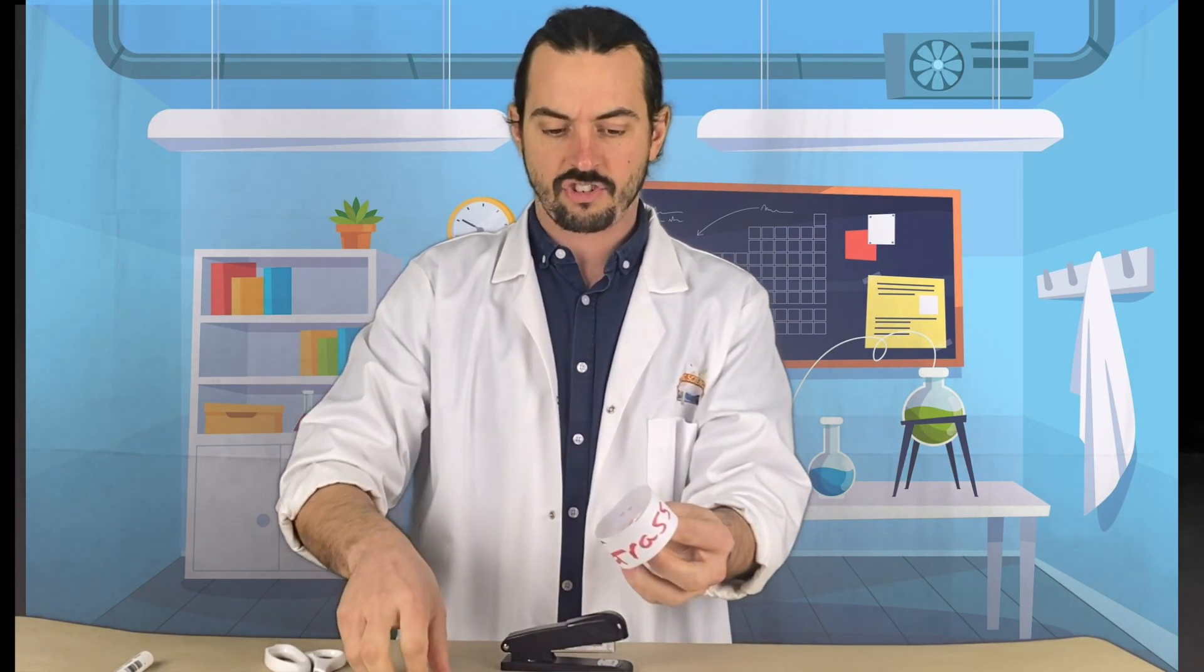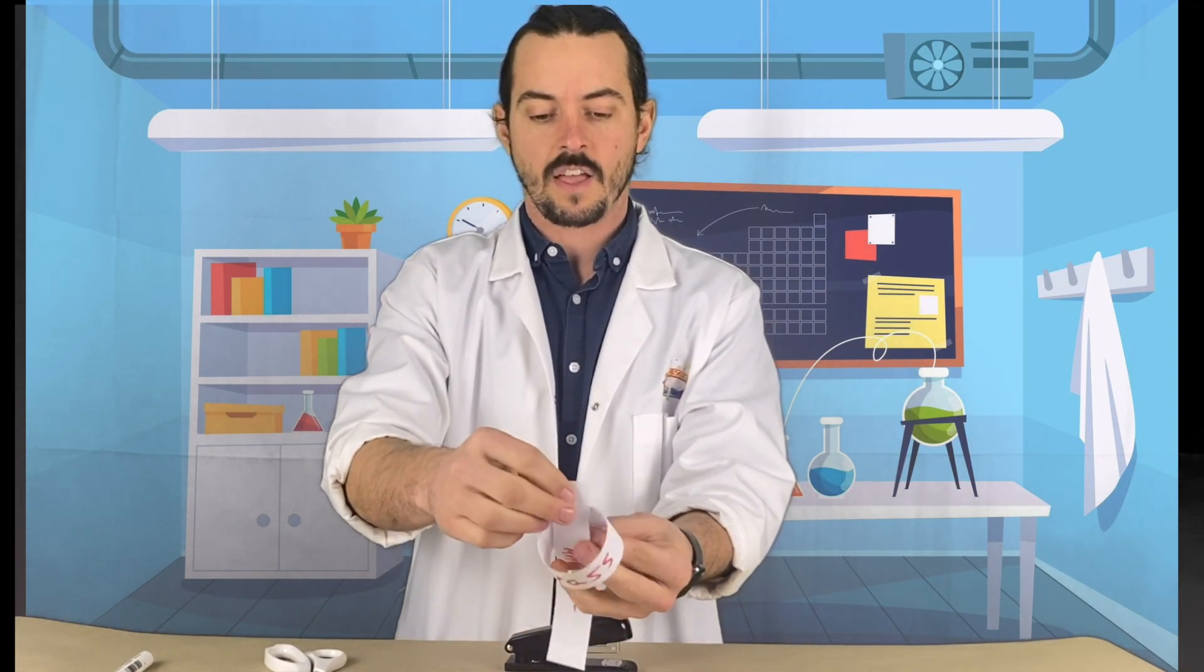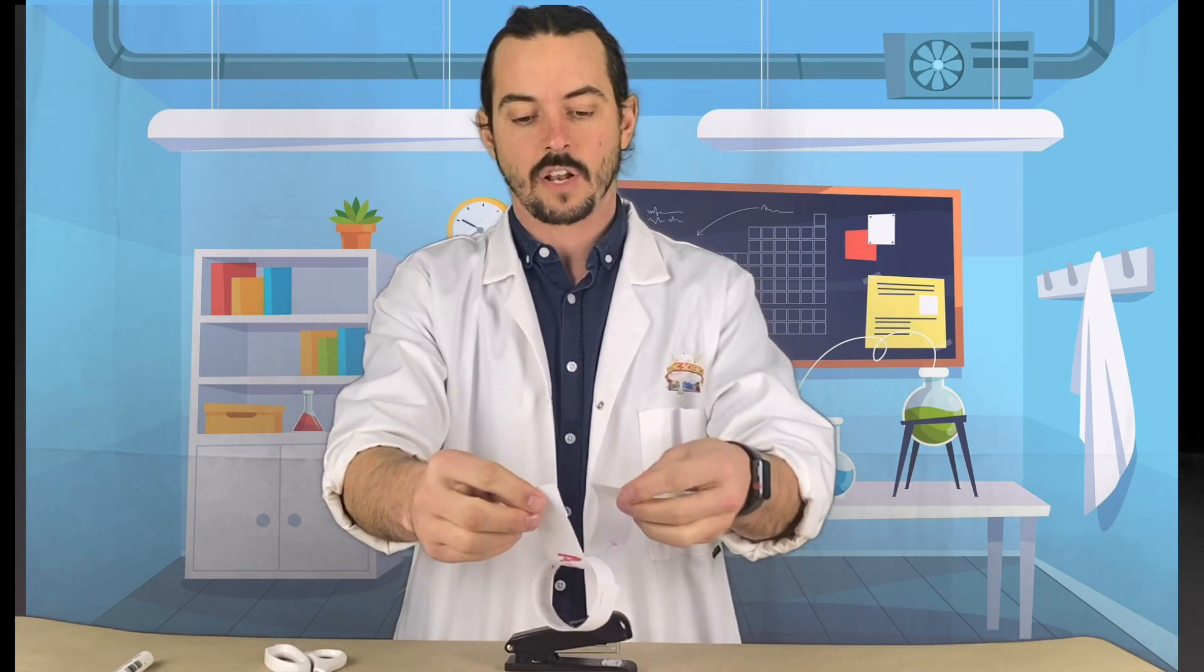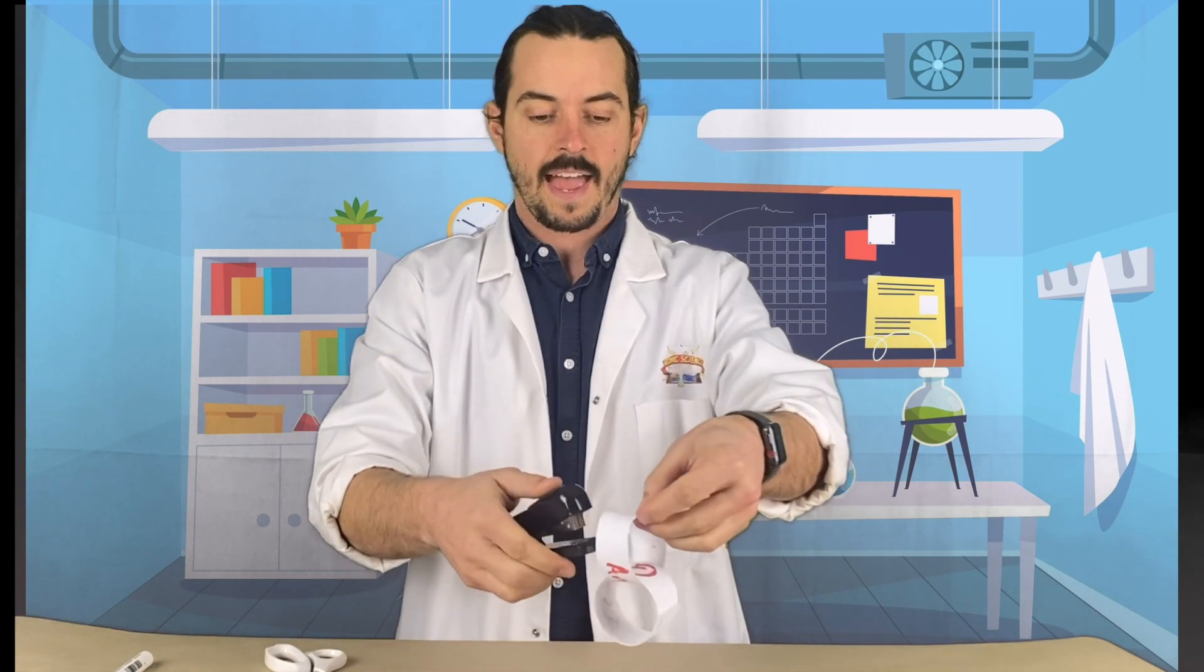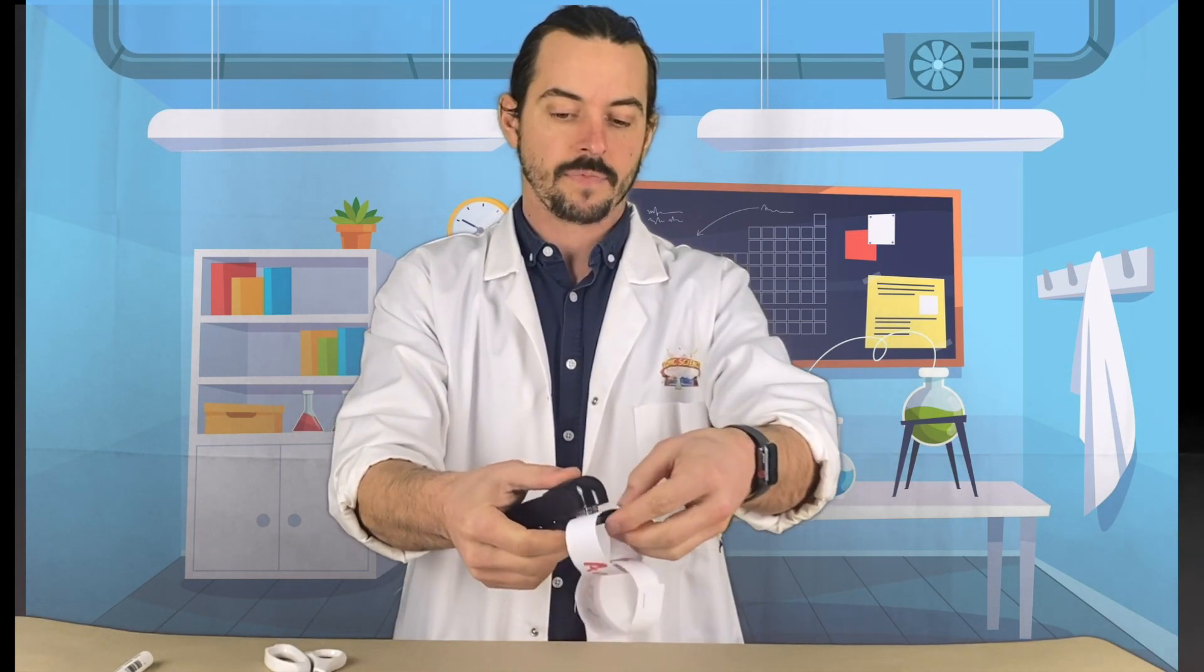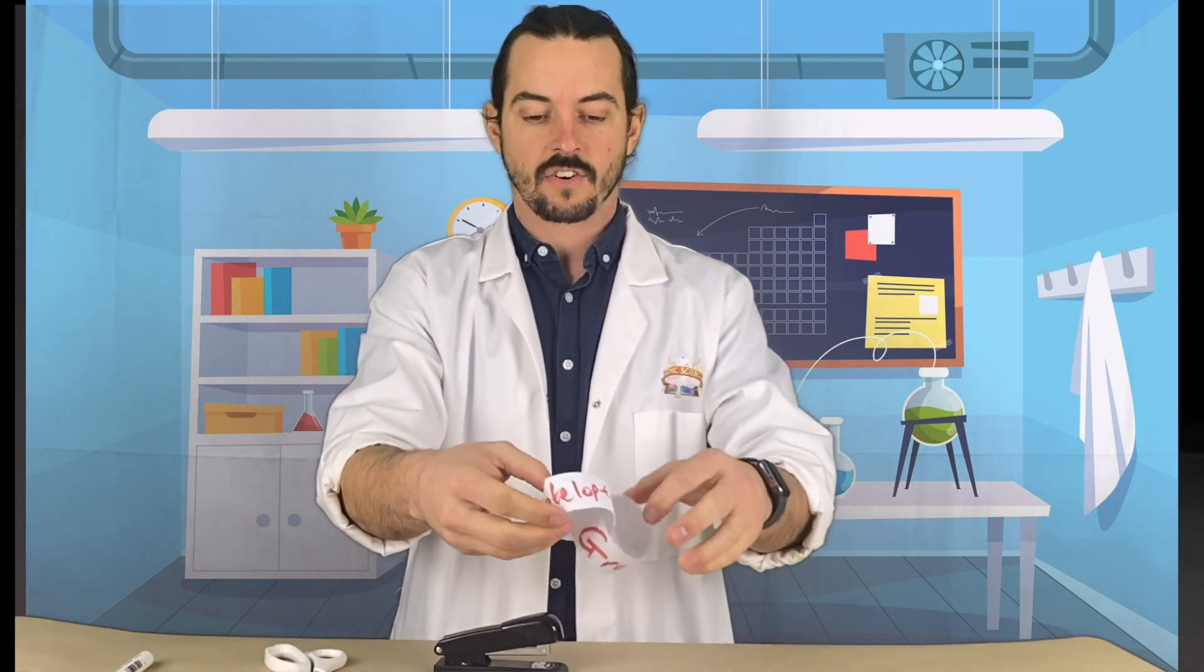Now to make the chain, I need to thread this living thing through here. The antelope, because it's going to eat our grass, we'll thread that through there. And then another staple. Excellent. And now we have the antelope eating the grass.